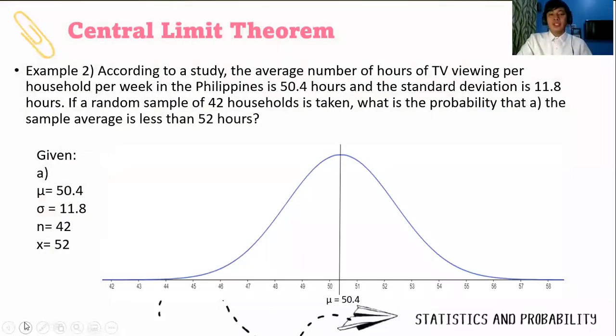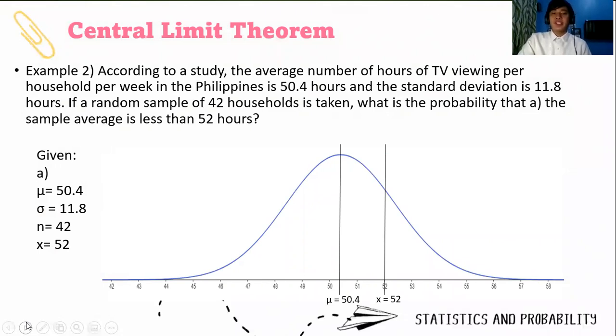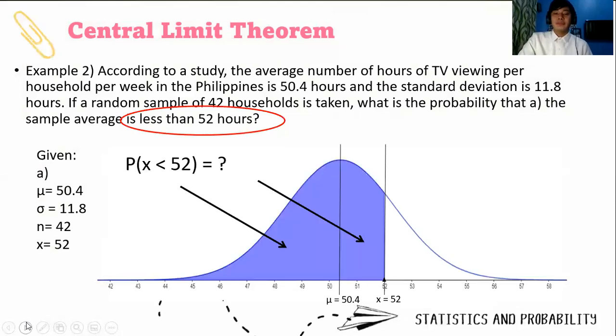Let us represent it on the normal curve. First you locate the center, that is the population mean μ, that is 50.4. Then we locate the raw score 52. Since it is less than 52 hours, we shade the left side because less than means left.